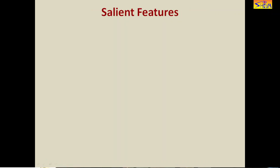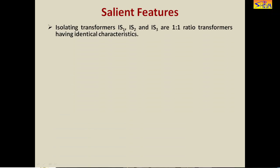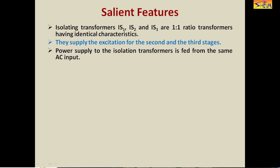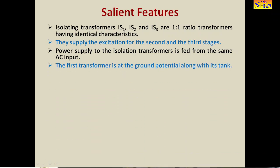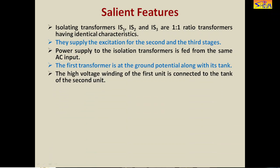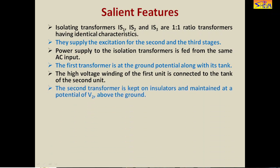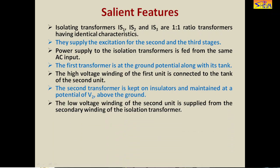The salient features of this arrangement are: IS1, IS2 and IS3 are isolation transformers having a transformation ratio of 1:1 with identical characteristics. They supply the excitation for the second and third stages. Power supply to the isolation transformers is fed from the same AC input. The first transformer is at ground potential along with its tank. The high voltage winding of the first unit is connected to the tank of the second unit, which is kept on insulators at a potential of V2 above ground. The low voltage winding of the second unit is supplied from the secondary winding of the isolation transformer.